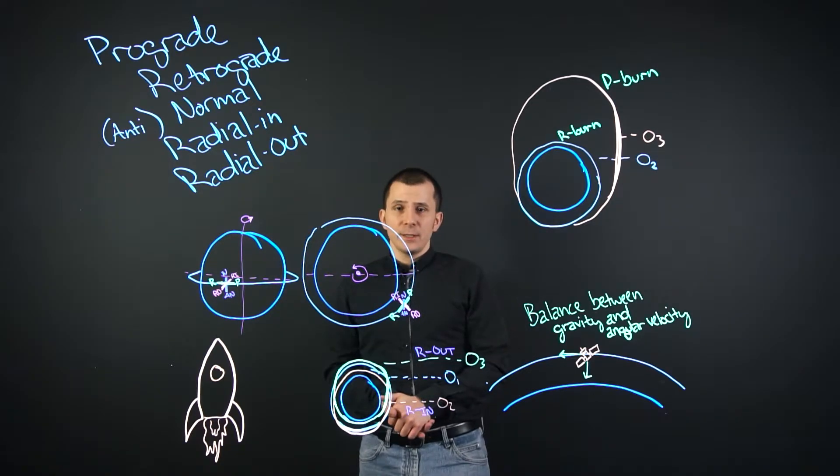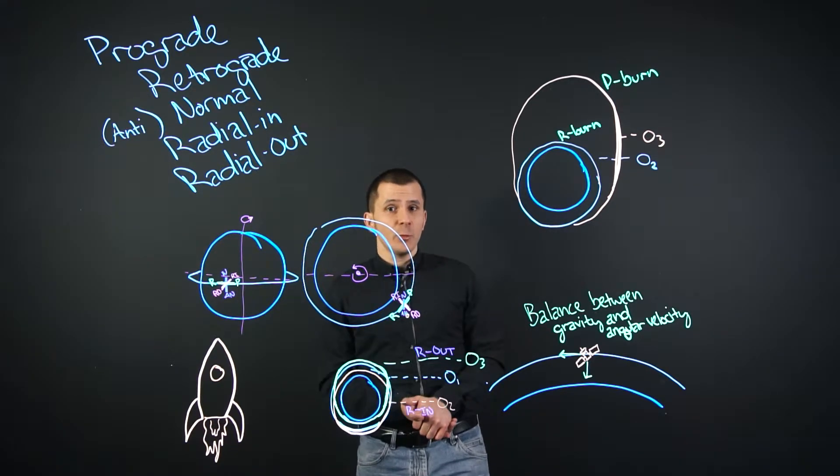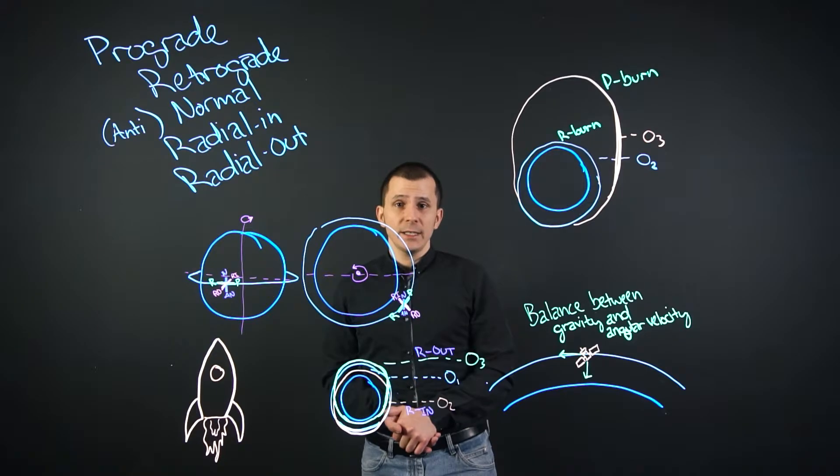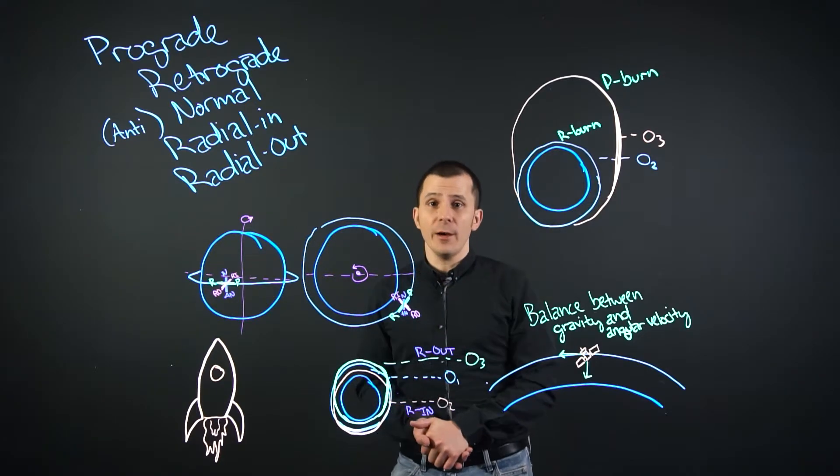Hey there! Today we're going to talk about different orbital parameters such as prograde, retrograde, normal, antinormal, radial in, and radial out.